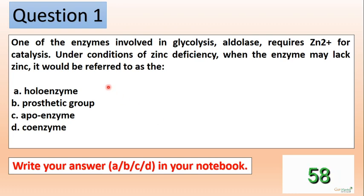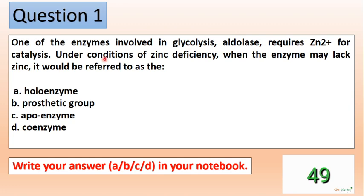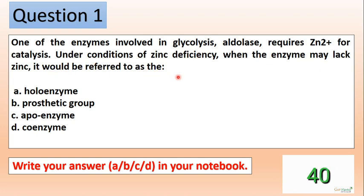Here is the very first question. One of the enzymes involved in glycolysis, aldolase, requires zinc ion for catalysis. Under conditions of zinc deficiency, when the enzyme may lack zinc, it would be referred to as what?